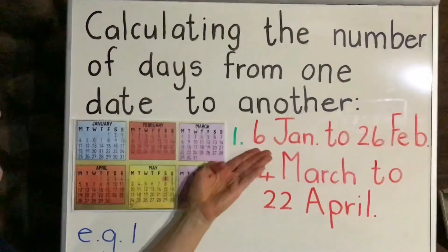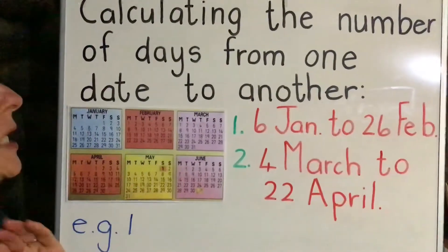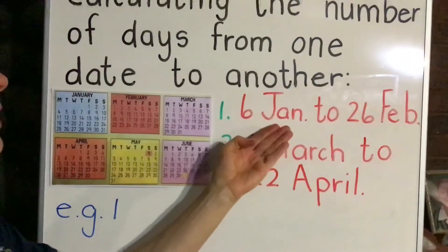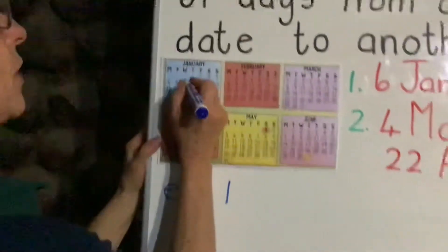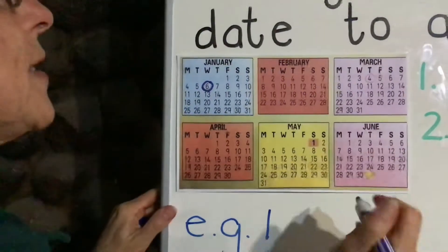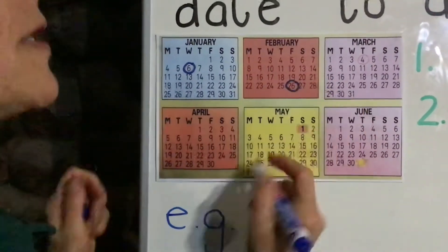From the 6th of January to the 26th of February. We start by circling that first date, the 6th of January. Let's circle that, and then the 26th of February, we're going to circle that date next. There we go. Now we want to work out how many days between those two dates.